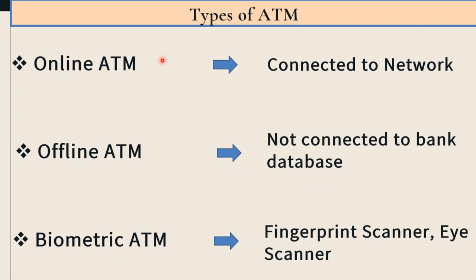The next type is Online ATM. Online ATM means the ATM which is connected to the network 24x7. Every time a customer can perform banking transactions from any ATM machine because this type of ATM is connected to the banking network. The next type is Offline ATM. The offline ATM is the type of ATM which is not connected to the bank database. Only a specific branch can use this type of ATM for their internal transactions.